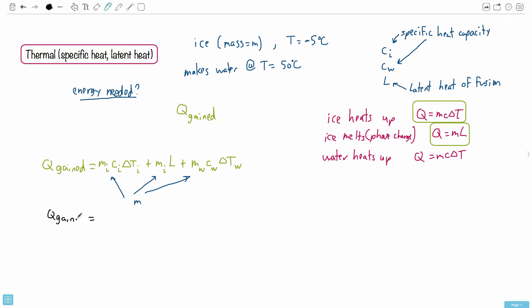It's going to be M times C ice. Now, what's the change in temperature of the ice? Think about it. It starts off at minus 5. It finishes at 0. So you would do the final thing minus the initial thing. So minus minus 5. Then I would do plus M times L, which I just have to put in, plus M times CW. That's the specific heat capacity of water, times delta T of the water. Now, what does the water do? Well, it's going to start off, after it's melted, it's at 0 degrees. And it's going to go from 0 to 50. So this is going to be 50 minus 0.